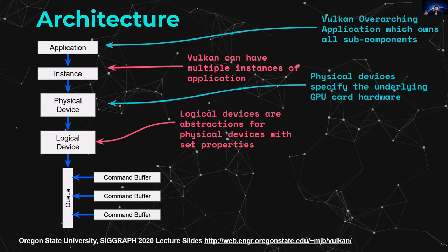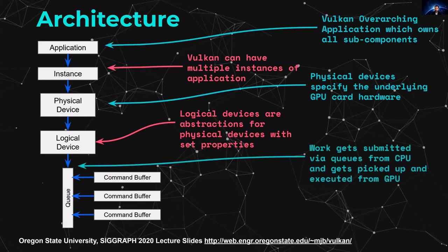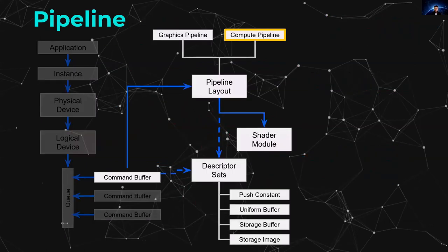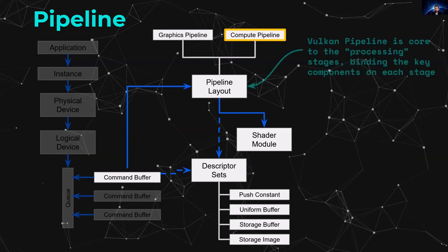With a logical device, the way you interact with the graphics card is through a queue. This queue holds multiple commands — you submit the instructions that need to be executed, and this is how you submit instructions to the GPU. Once you want to run more complex components, that's where the pipeline comes in. There is a compute pipeline and a graphics pipeline; we are going to focus on the compute pipeline.